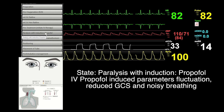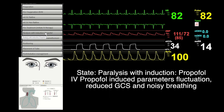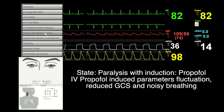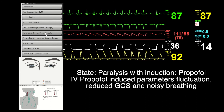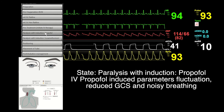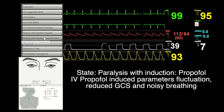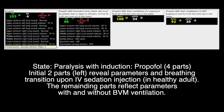The IV Propofol injection is the signal for the mannequin's operator to activate the state of paralysis with induction. This state consists of unique parameter swings, loss of consciousness, and noisy breathing. Behind the scenes, this state consists of four parts. The first two parts are bundles of parameter commands describing the mannequin's transformation from a conscious to an unconscious state. The last two parts are commands that incorporate the mannequin's sensors to reflect parameters in positive pressure ventilation or apnea conditions.